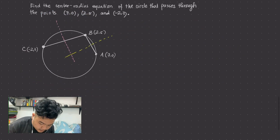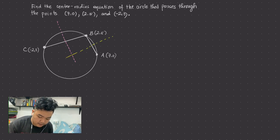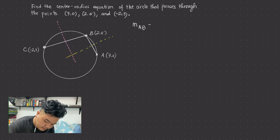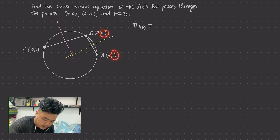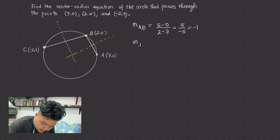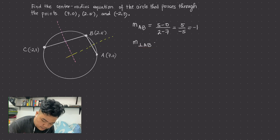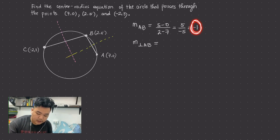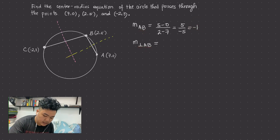Let us compute the perpendicular bisector of AB. We need the slope of AB first. The slope M of AB is Y2 minus Y1 over X2 minus X1, which is 5 minus 0 over 2 minus 7, giving us 5 over negative 5, or negative 1. So the slope of the perpendicular bisector of AB is the negative reciprocal of negative 1, which is 1.